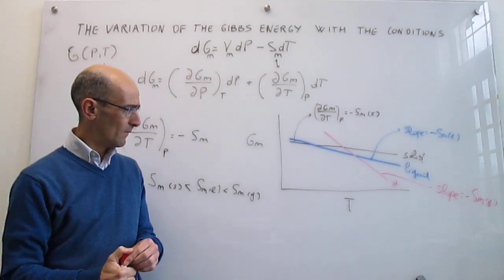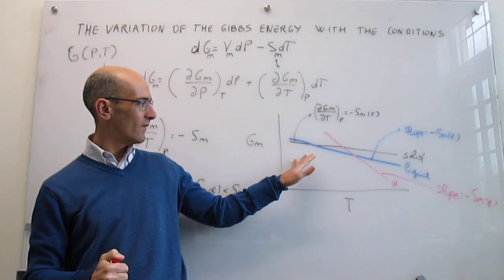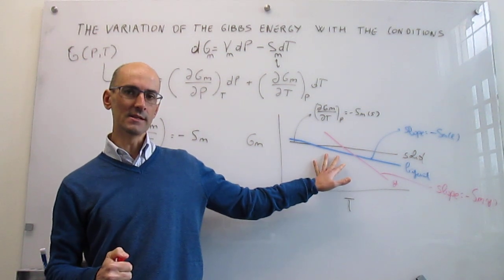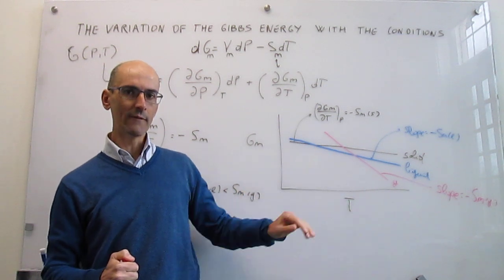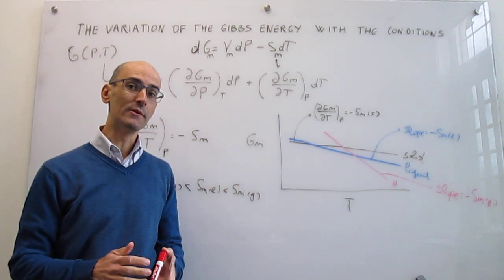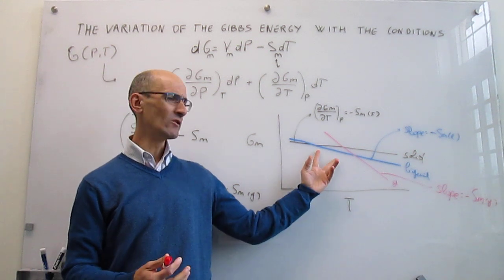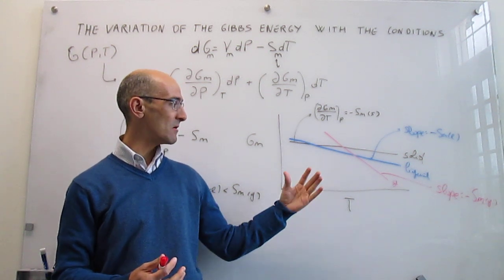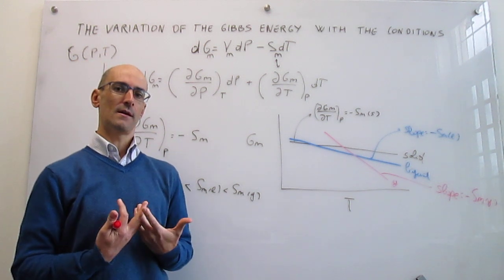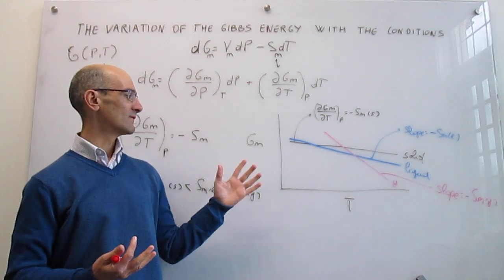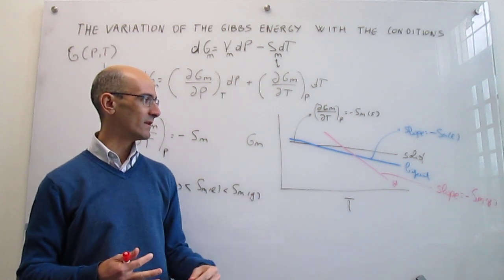The crossings of these lines will be important — we will need to wait until the chapter on phase equilibria to fully understand what those intersections represent. For now, we are simply getting a first look at how the molar Gibbs energy varies with temperature for a pure substance.